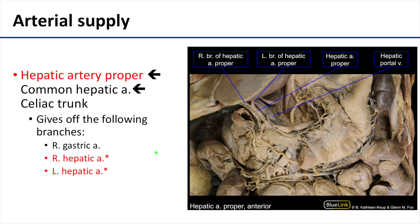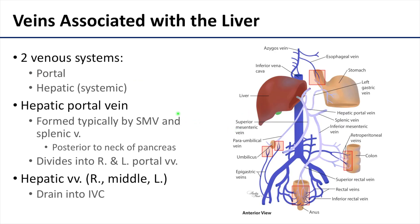The main arterial supply to the liver comes from the hepatic artery proper, which gives off the right and left hepatic arteries, branching just before reaching the liver as part of the portal triad. There are two venous systems associated with the liver — portal and hepatic (or systemic). The hepatic portal vein is formed by the superior mesenteric vein and the splenic vein, just posterior to the neck of the pancreas, then divides into right and left portal veins entering the liver. The parenchyma is drained by three main hepatic veins, which drain into the inferior vena cava just inferior to the diaphragm.